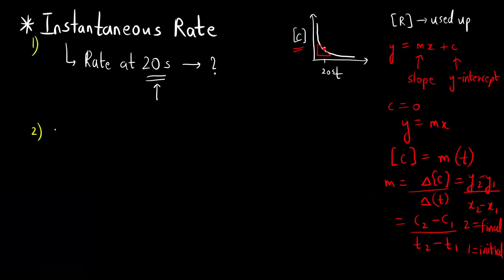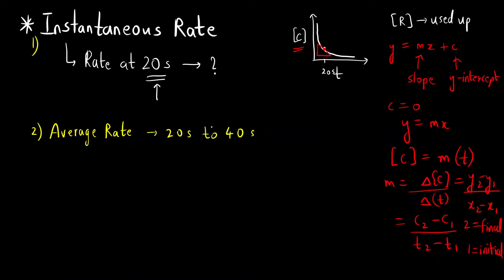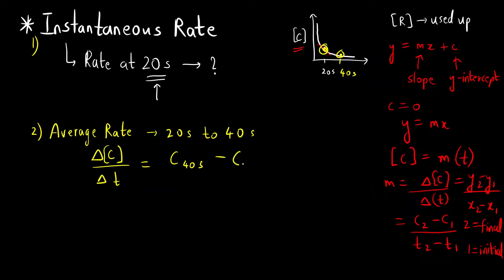Second is how do you calculate the average rate? Suppose I want to calculate the average rate between 20 seconds and 40 seconds. This was the point at 20 seconds, and suppose 40 seconds comes somewhere over here. You will mark both the points and calculate the change in concentration divided by change in time — that is concentration at 40 seconds minus concentration at 20 seconds, divided by 40 minus 20 seconds. In this way you can find out the average rate.